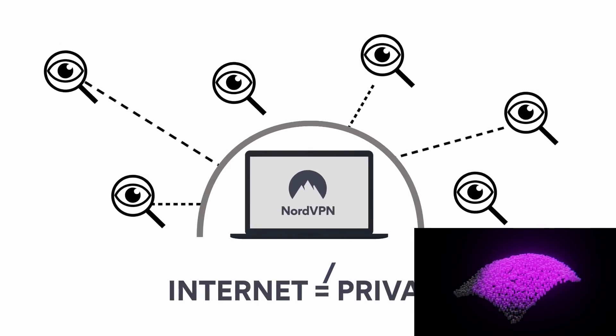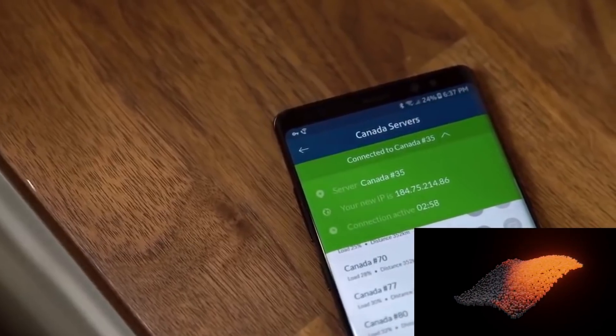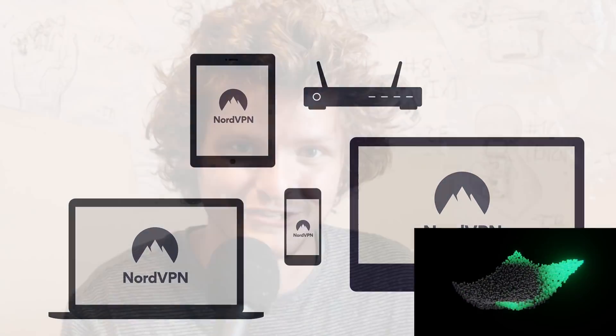NordVPN isn't only a tool that protects your privacy online — it definitely does that — but it also has a bunch of other features. For example, if there's region blocking in your region, maybe Netflix doesn't have a certain show in Canada, VPNs help you get around that so you can access things you otherwise couldn't. You can use it on your laptop, computer, phone, or whatever — up to six devices per account.